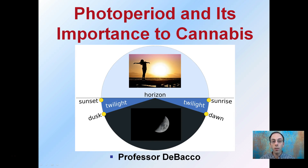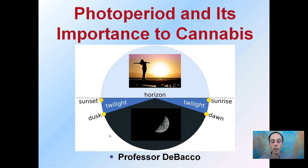When growing cannabis, it's very important to keep in mind the photoperiod that you're exposing your plants to. Photoperiod is the duration of continuous light or continuous darkness that those plants are being exposed to, because that will impact whether the plant stays in a vegetative state or goes into a flowering state.